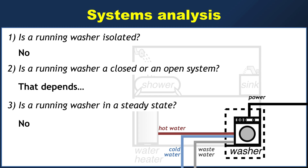Something you may not have thought of, however, is that the power cord also has the ability to affect whether or not a washer is in a steady state. By allowing work to be done on the system, you can imagine that its total energy can certainly change as a result of being plugged in. That makes it even less likely that a running washer is going to be in a steady state.